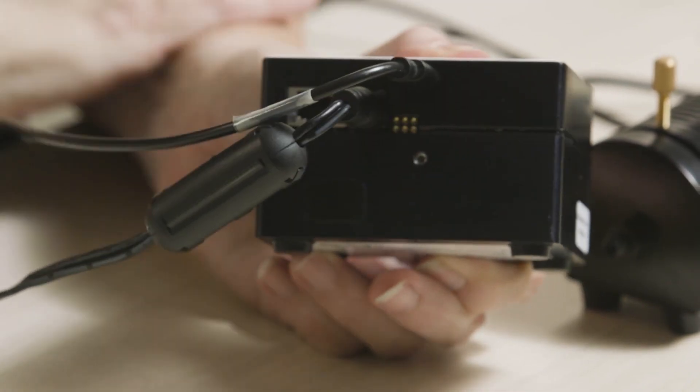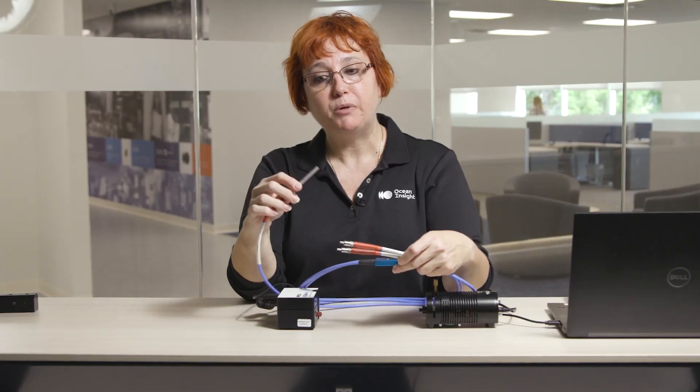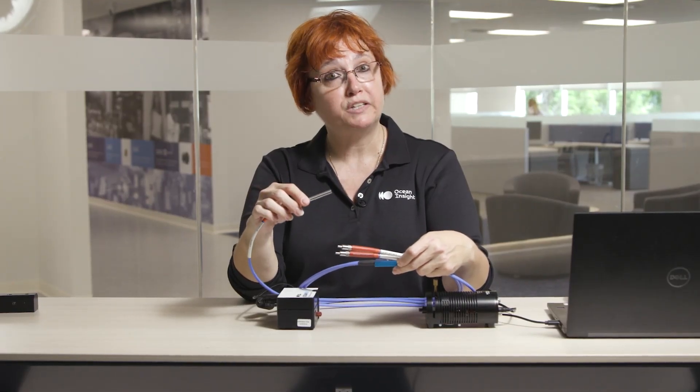Next, we're going to add our reflection probe. What you'll see is we have one end of the probe that has a common end and has our ferrule. This is the part of the probe that we're going to use for our reflectance measurements.